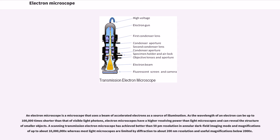electron microscopes have a higher resolving power than light microscopes and can reveal the structure of smaller objects. A scanning transmission electron microscope has achieved better than 50pm resolution in annular dark field imaging mode and magnifications of up to about 10,000,000x, whereas most light microscopes are limited by diffraction to about 200nm resolution and useful magnifications below 2000x.